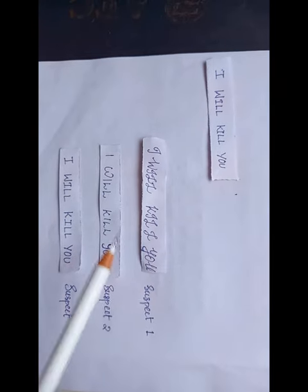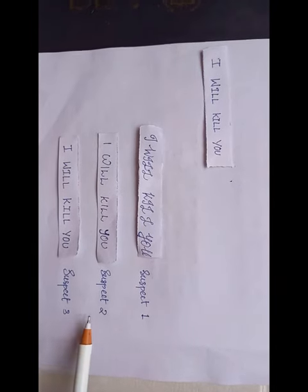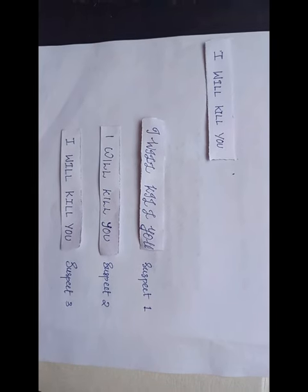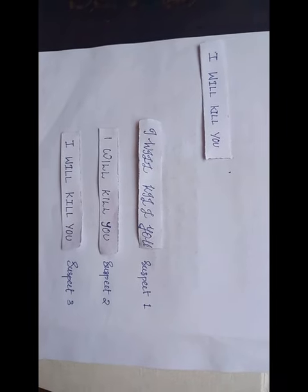Here we have a sample of the criminal's handwriting left at the crime scene, along with the handwriting of suspects 1, 2, and 3. We can eliminate suspect 1's handwriting because it is in cursive letters, and the criminal's handwriting is not in cursive. For suspect 2, we can see that the W, I, and L are different from the criminal's W, I, and L, so it is not suspect 2. Coming to suspect 3, looking at all the characteristics we discussed, we can see they all match. So we can conclude that suspect 3 is the criminal.